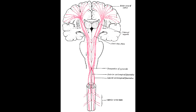What are the clinical presentations observed in upper motor neuron lesion? The clinical features observed in upper motor neuron lesion include hyperreflexia, hypertonia, and the Babinski sign is present.